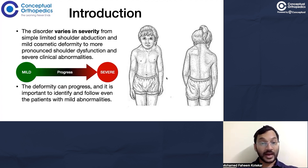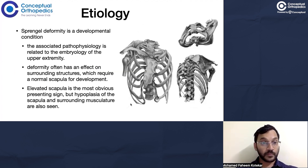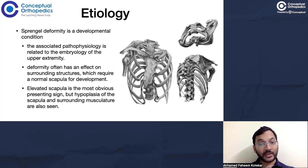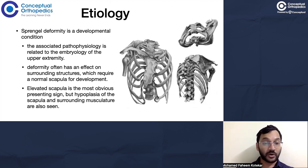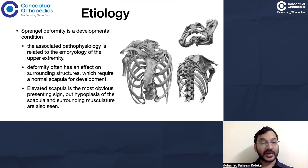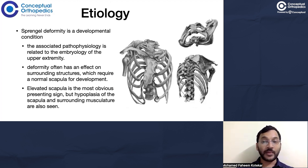That is why we need to identify the condition and follow these patients up even if they are having mild abnormalities. Sprengel's deformity is a developmental condition and the associated pathophysiology is related to the embryology of the upper extremity. It's not just the bone but also the surrounding structures required for normal development of the scapula. The elevated scapula is the most obvious presenting sign, but there is also a smaller or hypoplastic scapula.